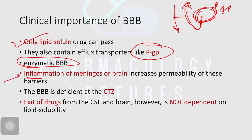But if any pathology is present — for example, inflammation of the meninges or inflammation of the brain — that will make the blood-brain barrier somewhat compromised, due to which the permeability of this barrier increases. So, obviously, in inflammatory conditions of the brain and meninges, the permeability of the blood-brain barrier increases.